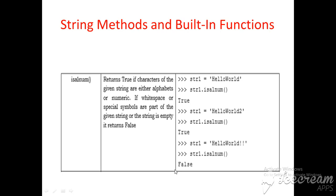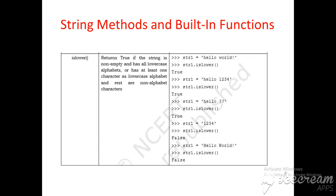In summary, isalnum() returns true if the characters of a given string are either alphabets or numeric. If whitespace or special symbols are part of the given string, it returns false. This is the use of isalnum(). The next method is islower().